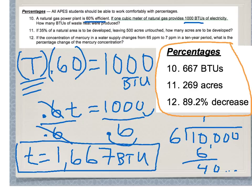But it's not perfectly efficient — it's only 60% efficient, so it's only providing 1,000 BTUs of energy. If it could provide 1,667 and it's only providing 1,000, how much was wasted? Subtract the two numbers: 1,667 minus 1,000 equals 667 BTUs wasted.